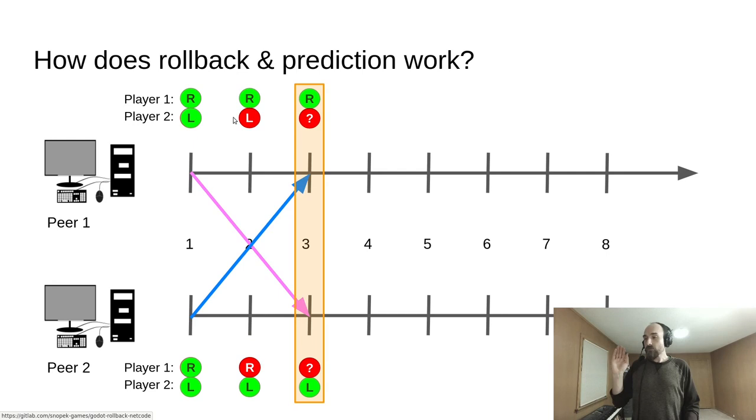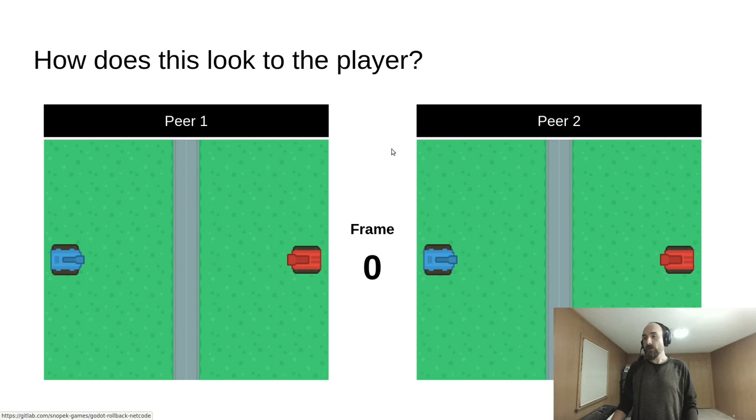So now we have this predicted input, we re-execute tick number 2, then execute tick number 3 with predicted input. However, all of this occurs within the 16-millisecond budget that frame 3 has. So the player is not going to see the game state return to what it was two frames ago, they're just going to see the result of having done that.